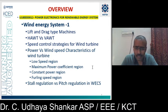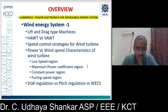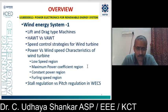Then we will be discussing about the characteristics of the wind turbine — that is, power versus wind speed characteristics. This is a very important topic in wind energy conversion. There are four different regions: low speed region, maximum power coefficient region, constant power region, and furling speed region.